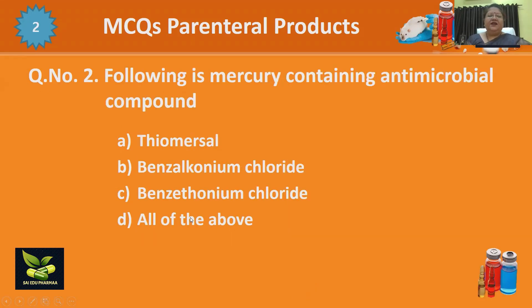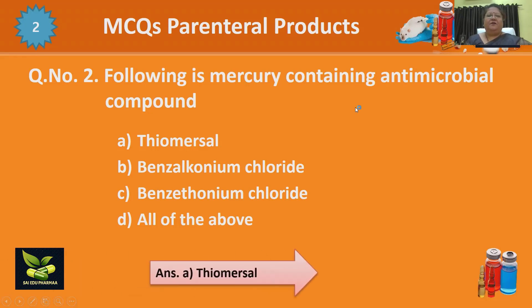Second question: which of the following is a mercury-containing antimicrobial compound? This question is from the additives of sterile products. Options are thiomersal, benzalkonium chloride, benzethonium chloride, and all of the above. Don't be confused — benzalkonium chloride and benzethonium chloride are both quaternary ammonium compounds, but thiomersal is the mercury-containing compound. So the answer is A, thiomersal.